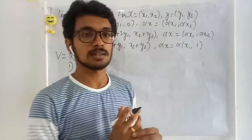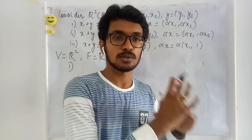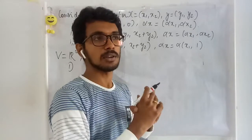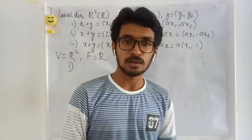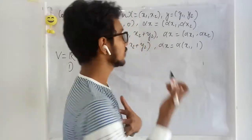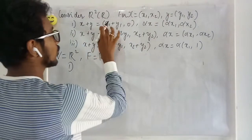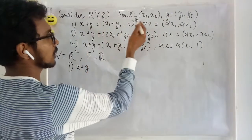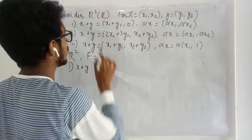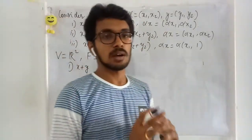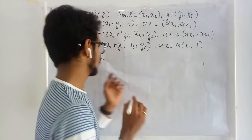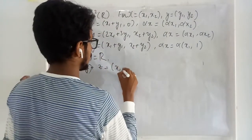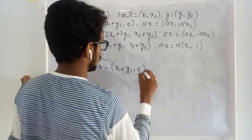Since scalar multiplication is defined in the usual sense, we don't need to worry about it for now. Since the entries x₁ and x₂ are in R², the closure property is satisfied. Let us go for associativity and check whether it holds.